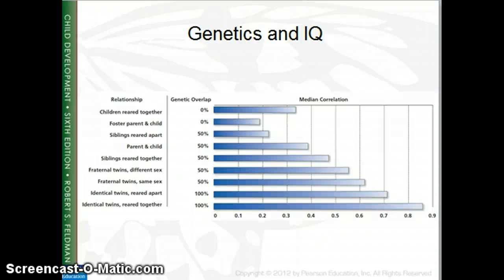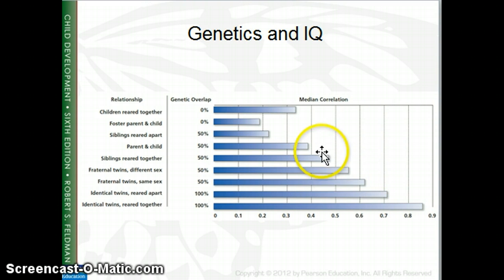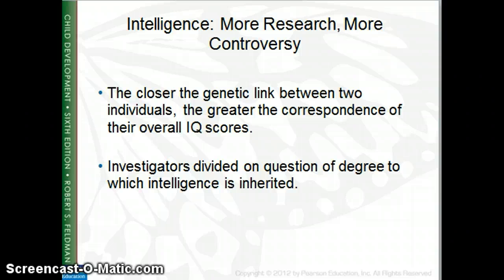This chart looks at genetics and IQ, starting with identical twins reared together, who show a 0.8 to 0.9 median correlation — a very strong relationship. Identical twins reared apart, raised in completely different families and settings, still had very close IQs. Then the chart moves to fraternal twins of the same sex, fraternal twins of different sexes, a parent and a child, siblings reared apart, foster parent and child, and children reared together in general. The closer the genetic link and the more similar the DNA, the stronger the correlation that their IQs will be similar.